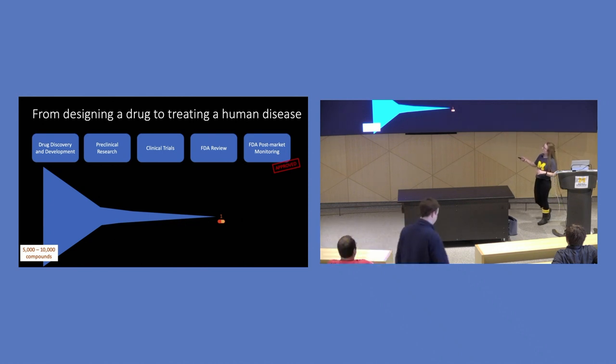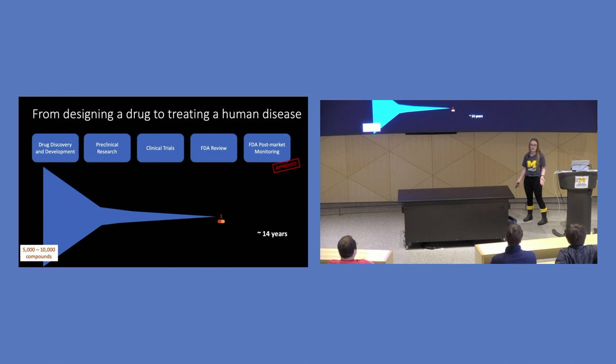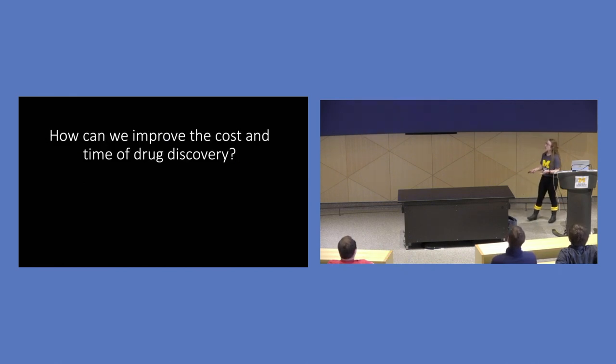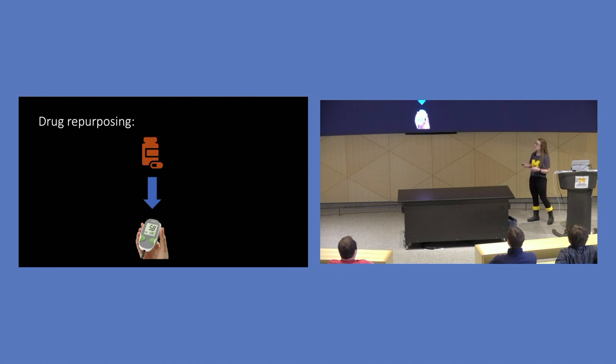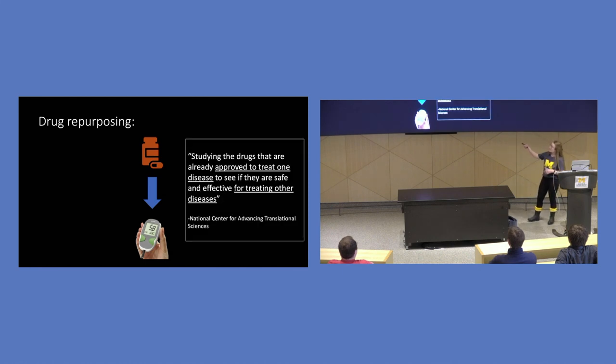And so, again, we said that this drug discovery process can take 14 years. So how can we improve the cost and time of drug discovery? What if we were to go back to drugs that have already been approved and gone through this process? So this is called drug repurposing. So this is when we're studying a medicine that has been approved to treat one disease, such as maybe type 2 diabetes, but we find what if this medicine could also be approved to treat something like cancer? And so there have actually been several drugs that are trying to be repurposed for ovarian cancer, one of which is actually type 2 diabetes medicine.